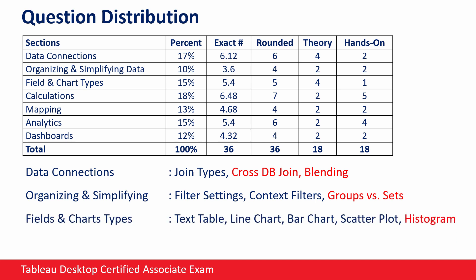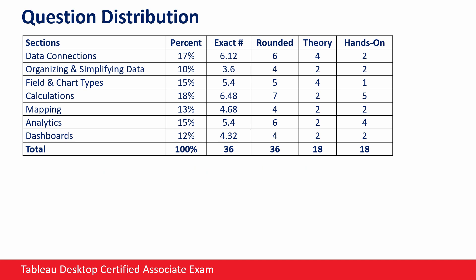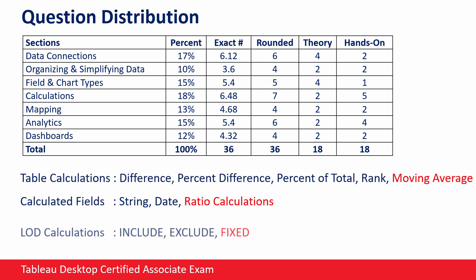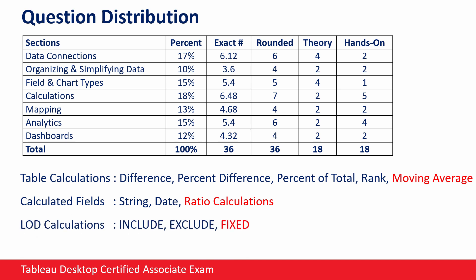For fields and chart types, you won't create fancy charts, but you have to know the listed charts in detail. All charts are equally important, but you especially need to know how to create and edit text tables, line charts, bar charts, scatter plots, and histograms. For calculations, you will get many hands-on questions from this section. You have to know table calculations, calculated fields, and LOD calculations in detail. Regarding table calculations, you need to know most of them, but difference, percent difference, percent of total, rank, and moving average calculations are extremely important. For calculated fields, you have to know at least the name of all available functions, but string, date, and ratio calculations are extremely important. Regarding LOD calculations, you have to know all of them in theory, but you must know the FIXED LOD calculation by heart — I think there will be two questions only about LOD calculations.